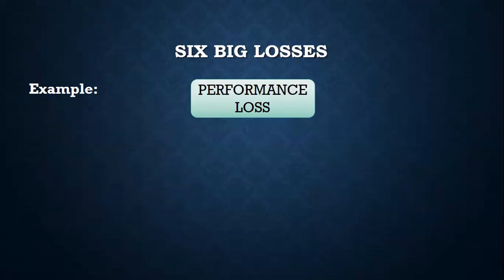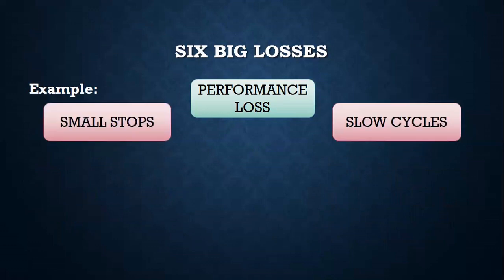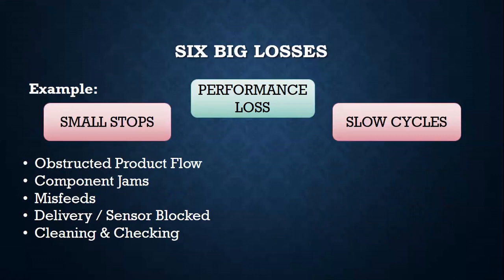Second is performance. Two losses are small stops and slow cycles. Under small stops, major examples are obstructed product flow in line or channel, component of equipment getting jammed, misfeeds or material feeding issues, blocked deliveries or sensors, and regular cleaning and check-up.